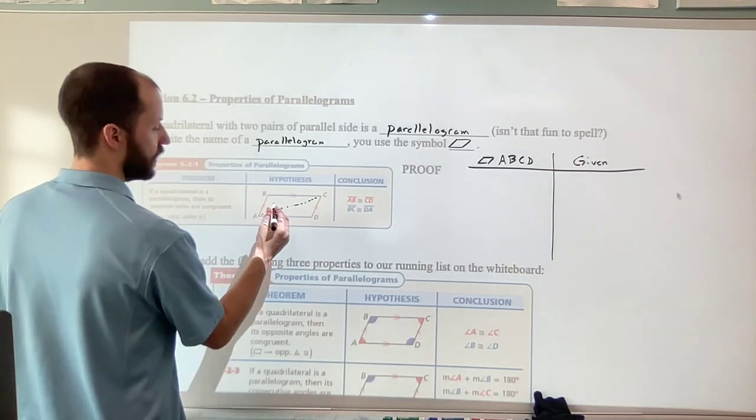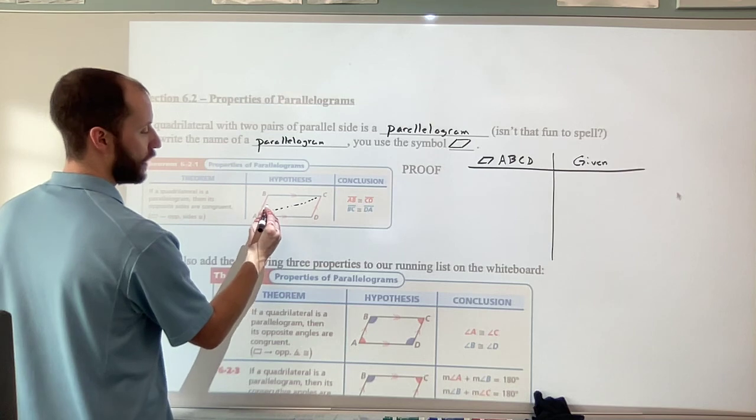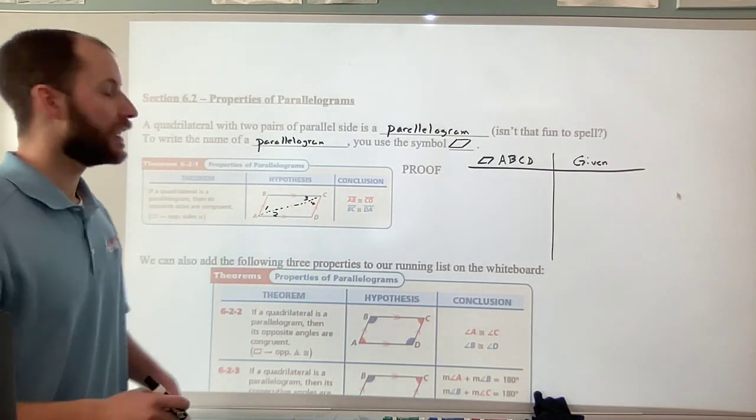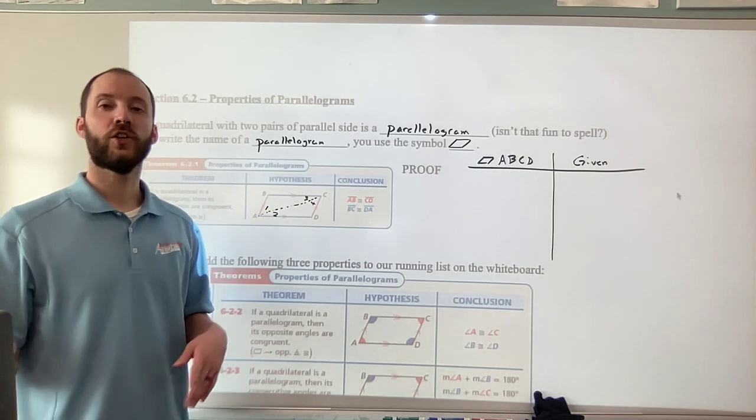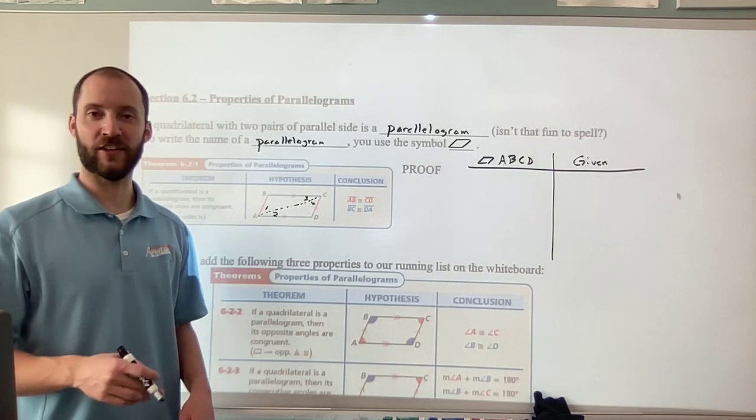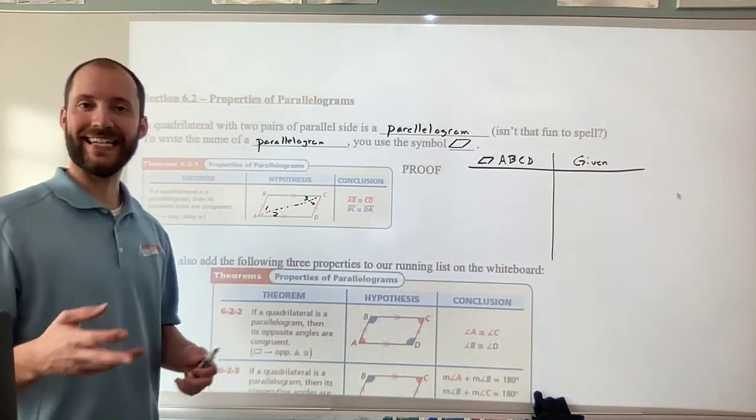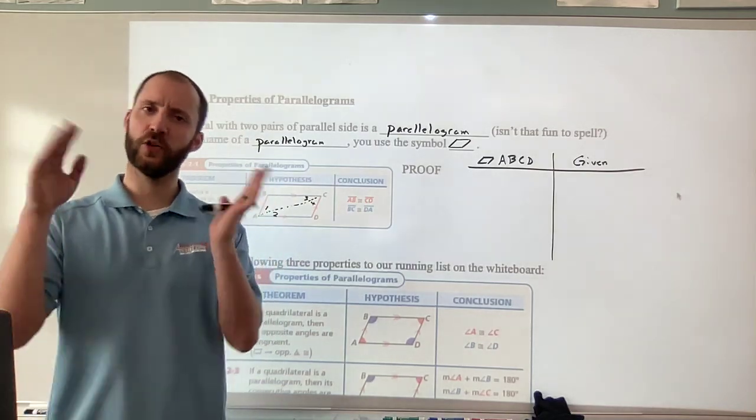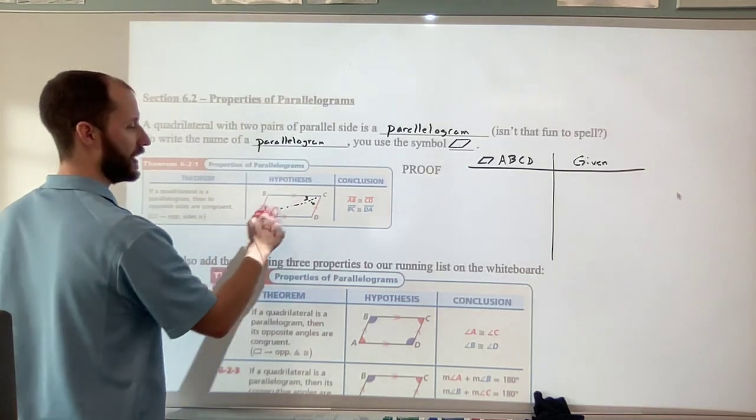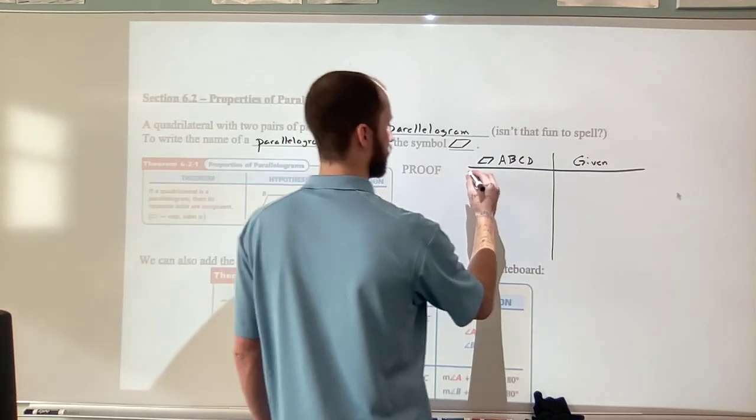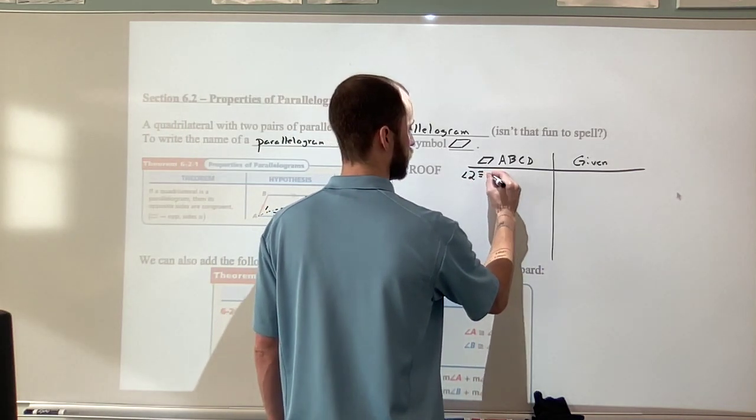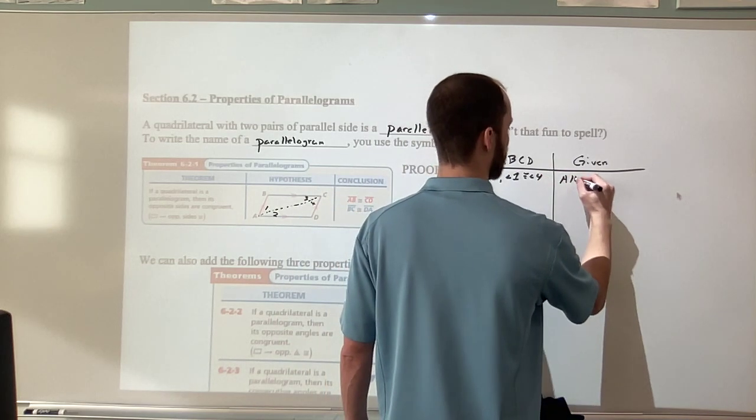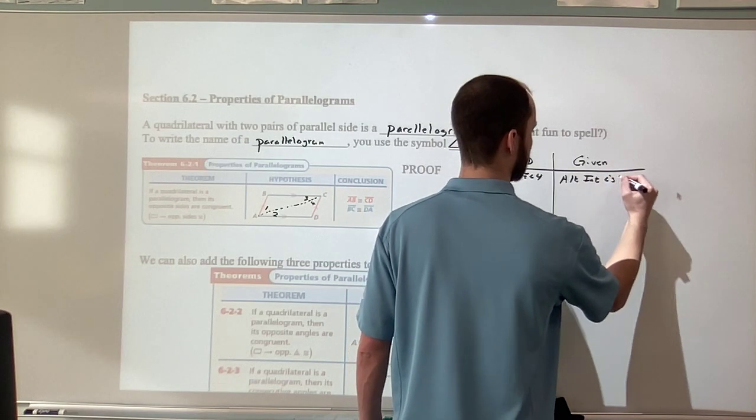So we'll name them triangle ABC, triangle ADC, and we'll get some angles in there as well. So angle one, angle two, angle three, angle four. Now we have two pairs of parallel sides. So then we also have two sets of alternate interior angles from that kind of Z shape. So here you have angles three and two. And then if you kind of let your head fall to one side, you'll see the Z shape here with angles one and four. So angle two congruent to angle three and angle one congruent to angle four by our alternate interior angles theorem.